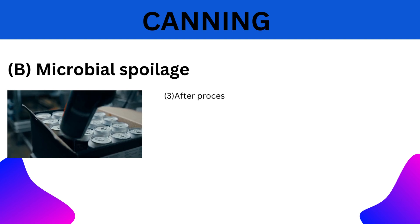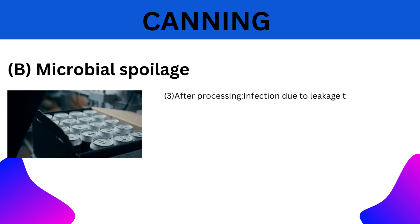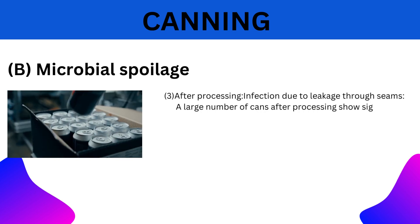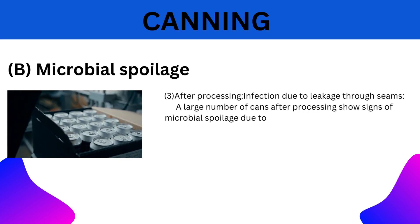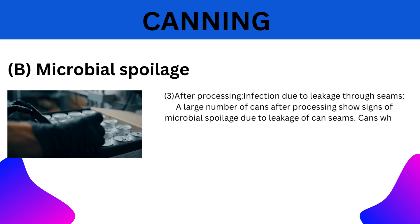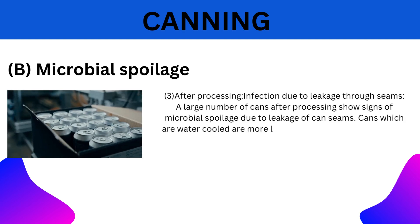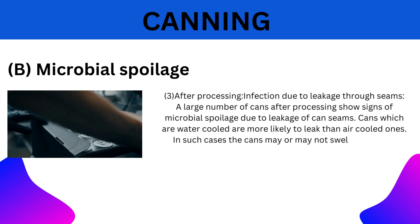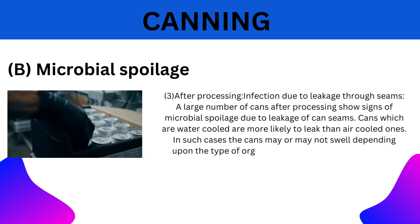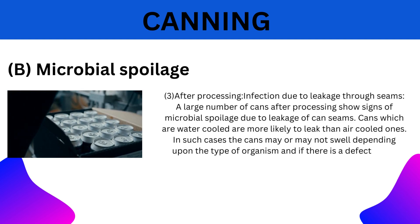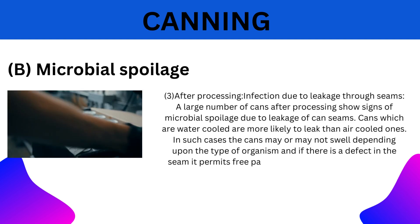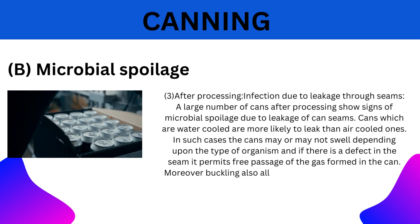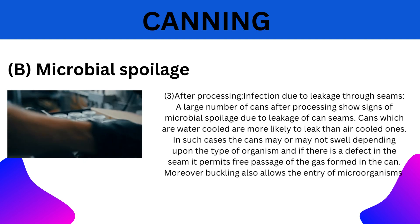3. After-processing — Infection due to leakage seams: A large number of cans after processing show signs of microbial spoilage due to leakage of can seams. Cans which are water-cooled are more likely to leak than air-cooled ones. The cans may or may not swell depending upon the type of organism. If there is a defect in the seam, it permits free passage of gas formed in the cans. Moreover, buckling also allows entry of microorganisms.